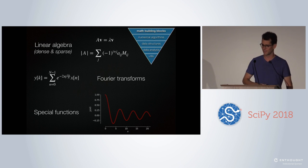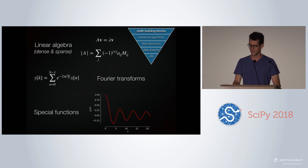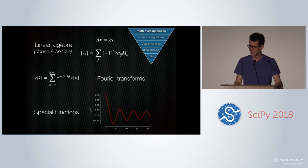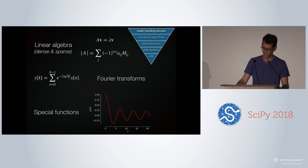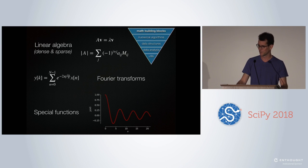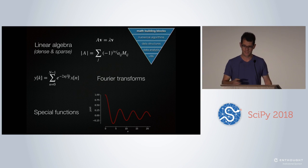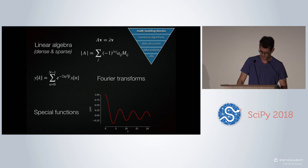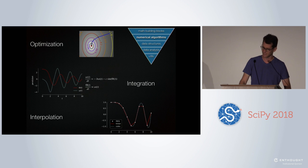If you go to the website, you'll see there are 16 sub-modules. For me, they fall into five categories. The first one is math building blocks. If you've done a physics, chemistry, or some kind of engineering degree, these math building blocks probably cover most of what you learned in that whole degree. So there's linear algebra — dense and with sparse arrays — then there's Fourier transforms and special functions. That's the lowest level stuff you can find in SciPy.